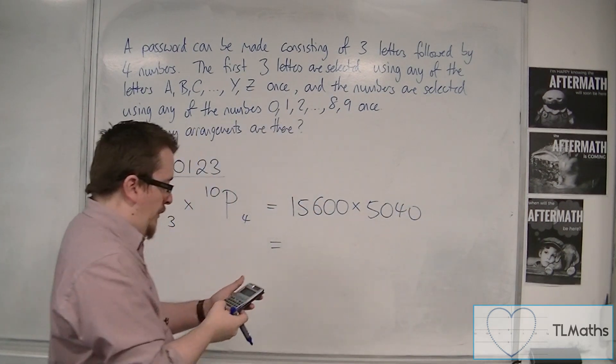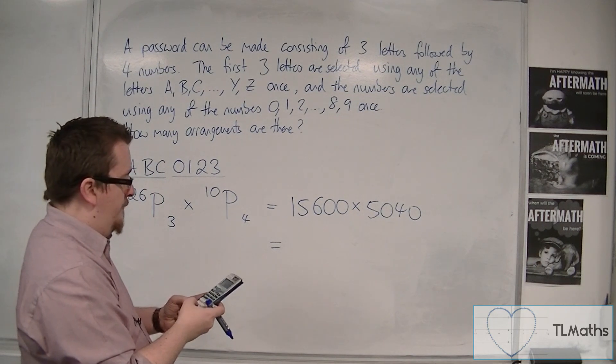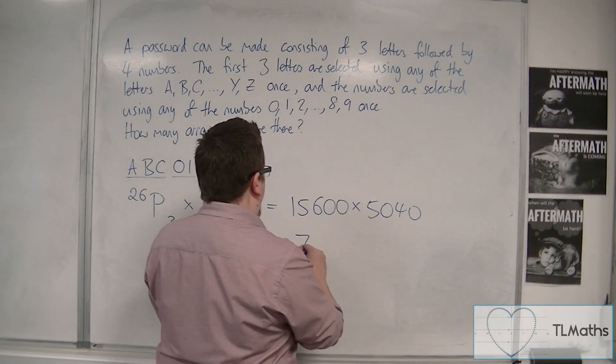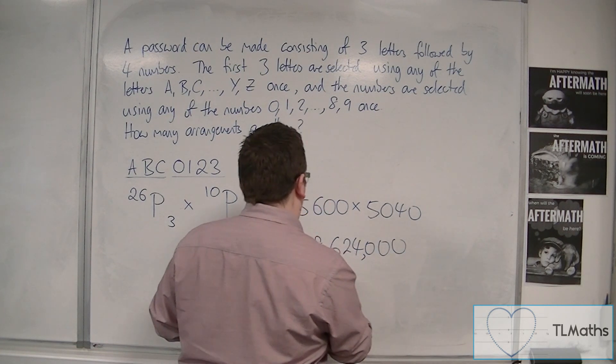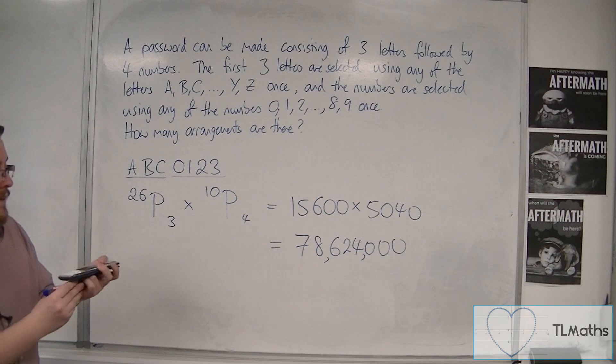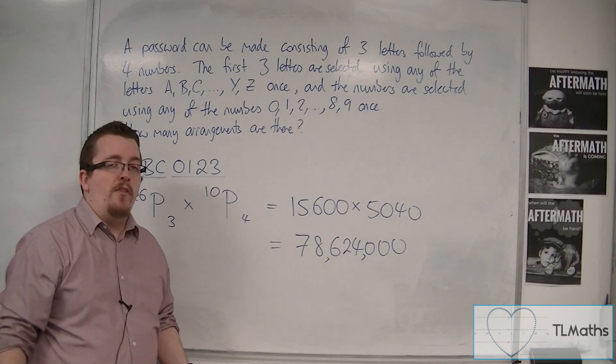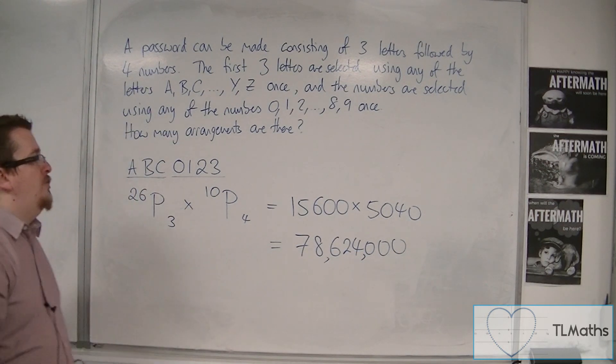So, I need to multiply these two things together, and I get 78,624,000. So, there's 78,624,000 different arrangements, okay?